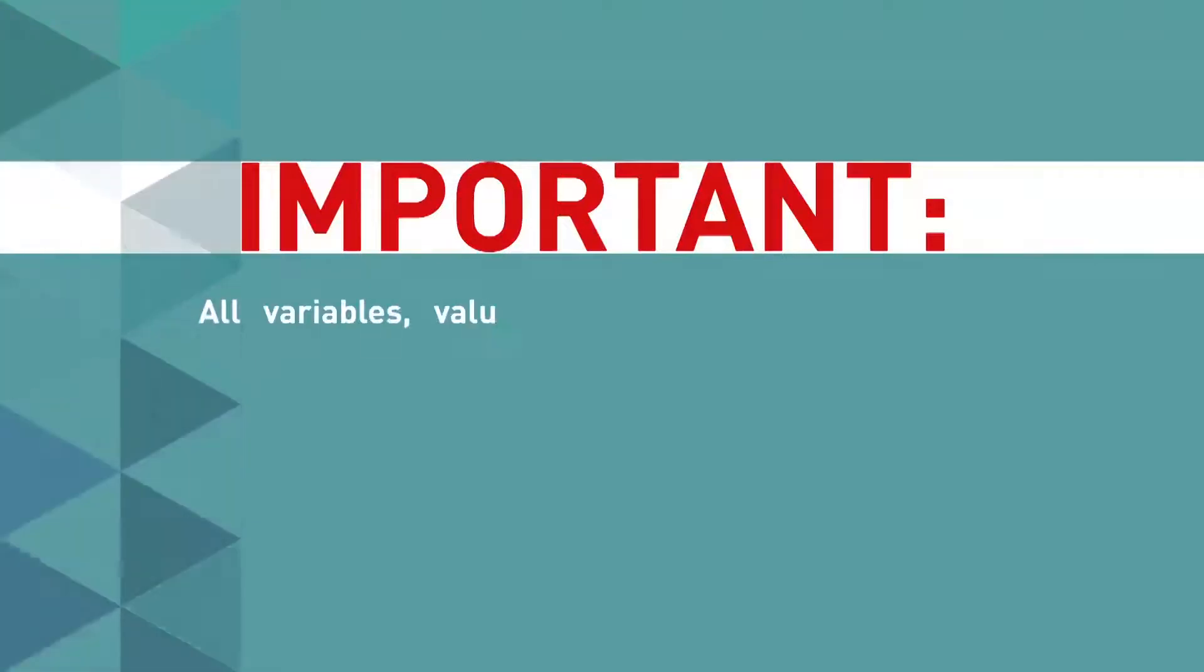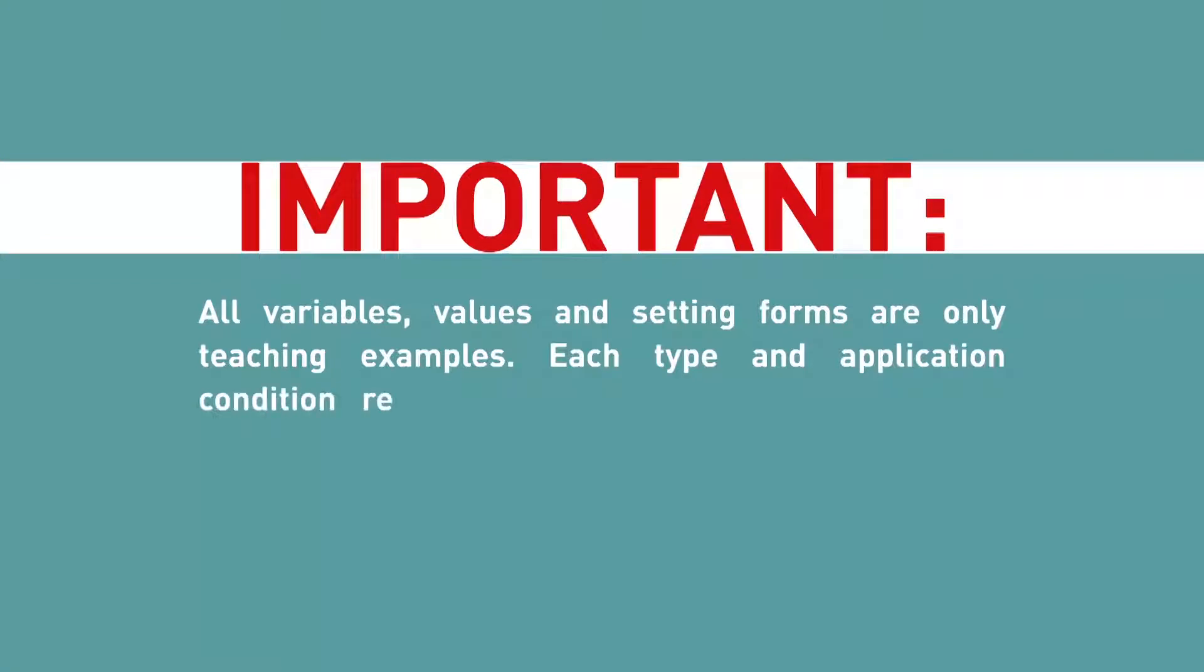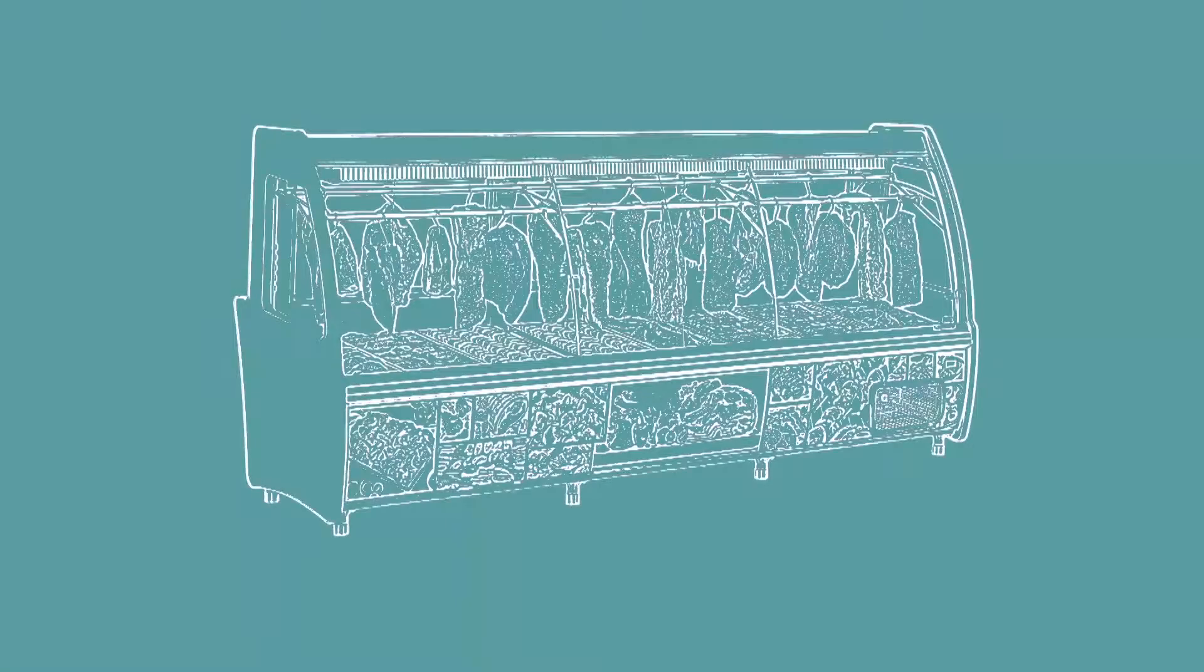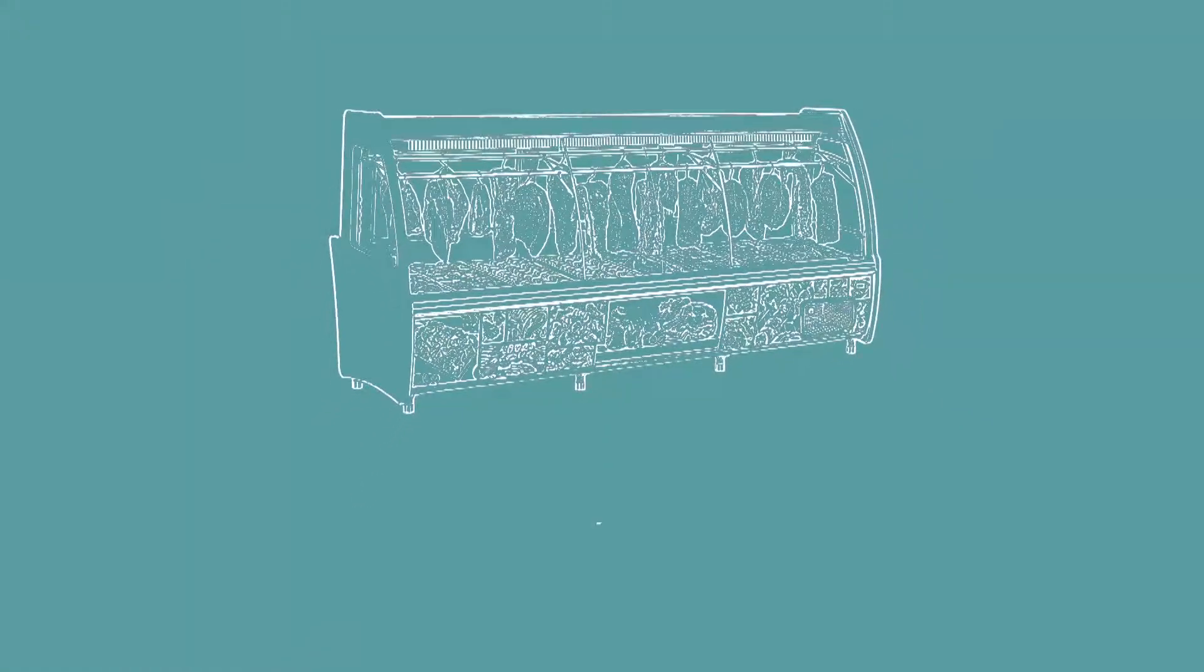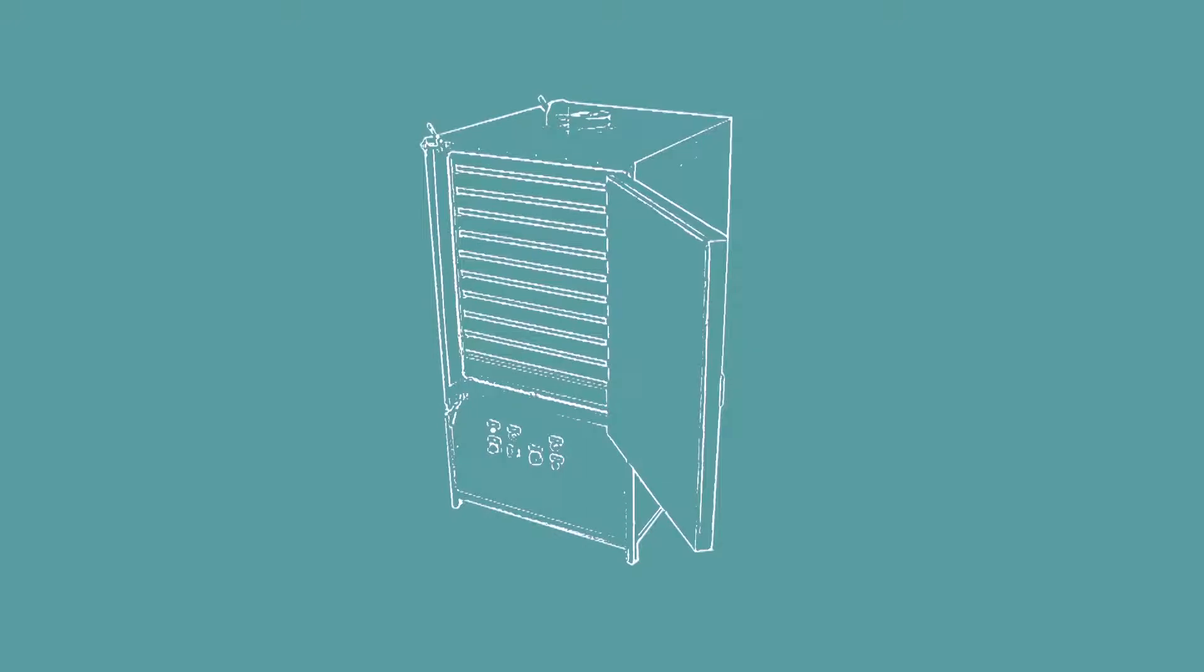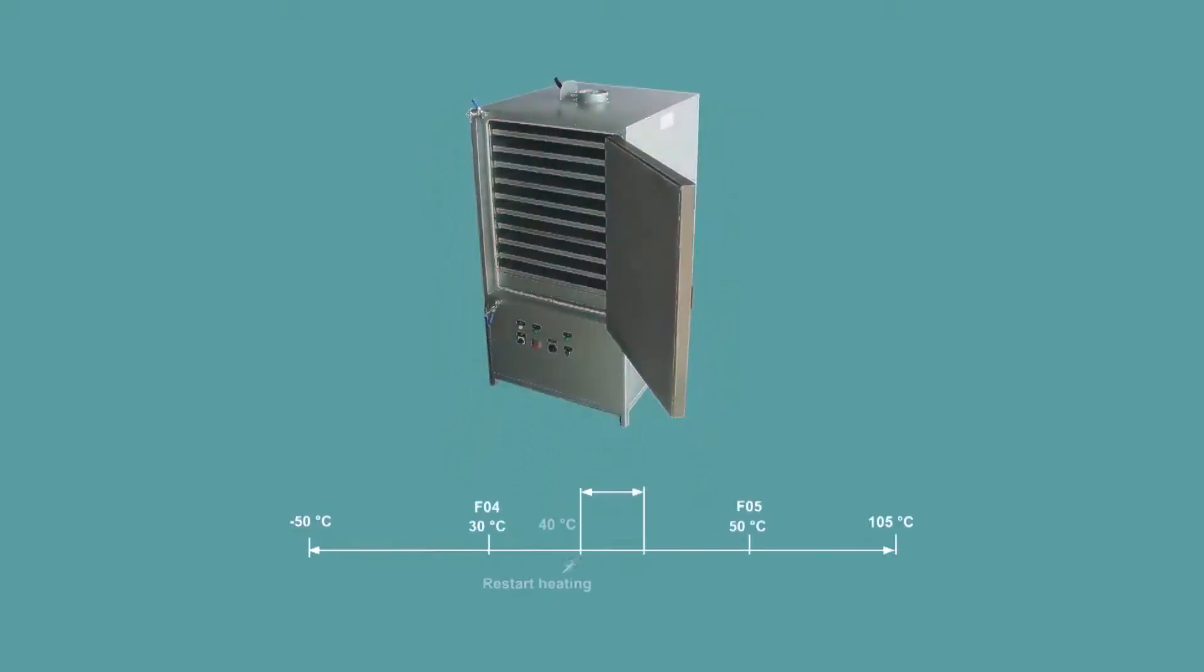Important: All variables, values and setting forms are only teaching examples. Each type and application condition require a careful analysis of all the available parameters for the best possible setting with maximum performance and safety. In the cooling example, we will consider a refrigerated counter where the temperature or set point must be maintained at 2 degrees Celsius. In the heating example, we will simulate a drying oven, which must be maintained at 45 degrees Celsius.